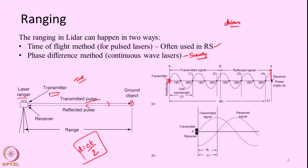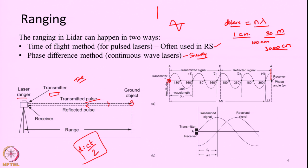If the distance is an integral multiple of the wavelength, the phase may not change. For example, if the wavelength is 1 centimeter and the distance between the transmitter and receiver is 30 meters — which equals 3000 centimeters, an integral multiple — the phase will not change, because whenever the beam travels a distance of 1 wavelength it completes one full phase cycle from 0 to 2π. So if the distance is an integral number of wavelengths, the phase will not vary.